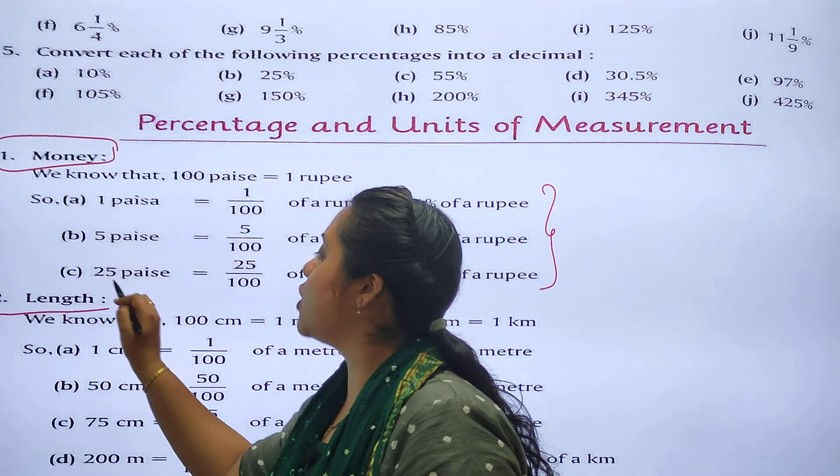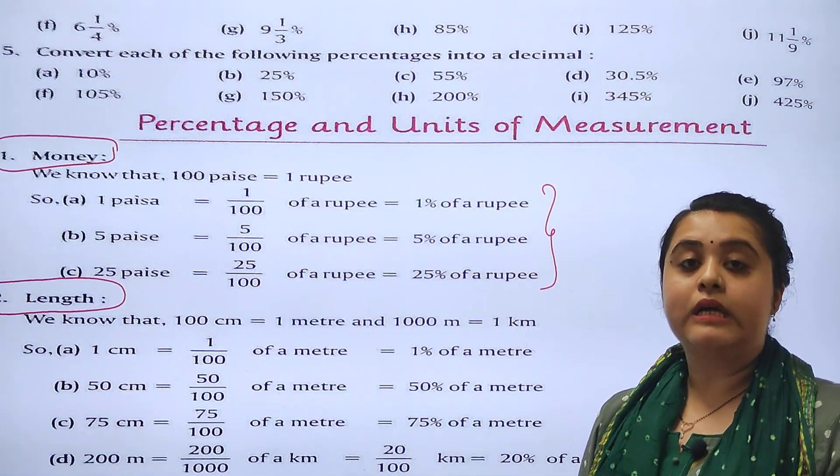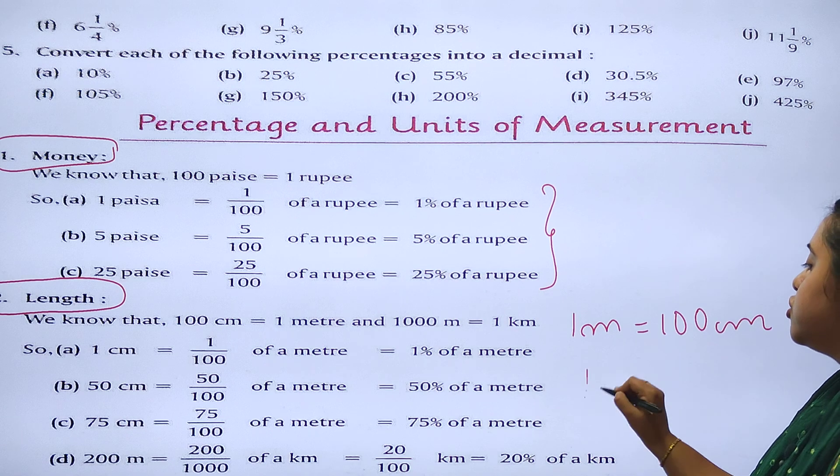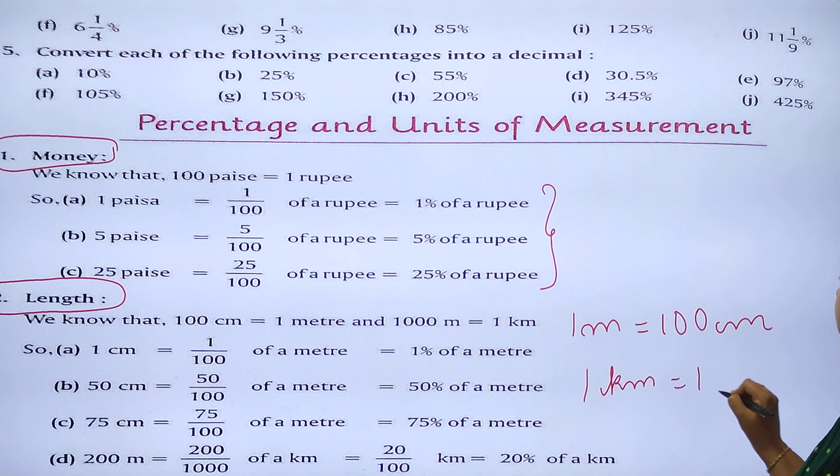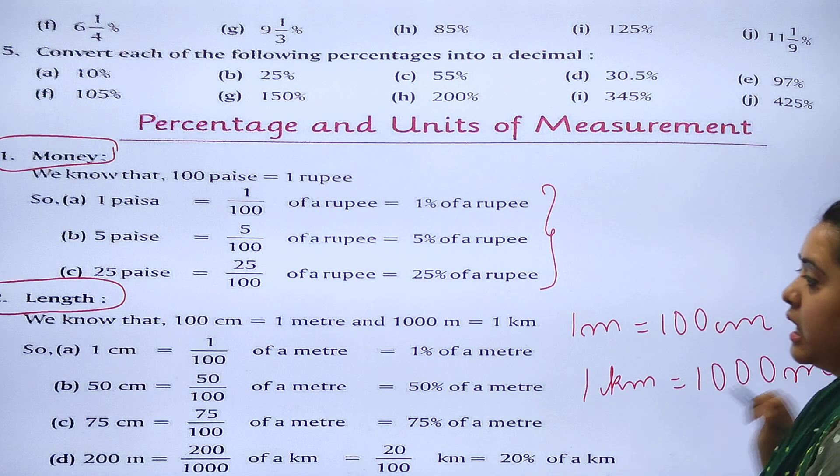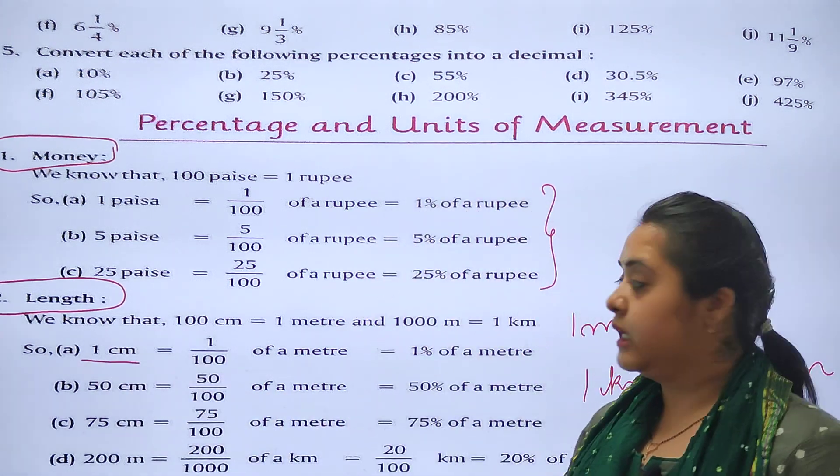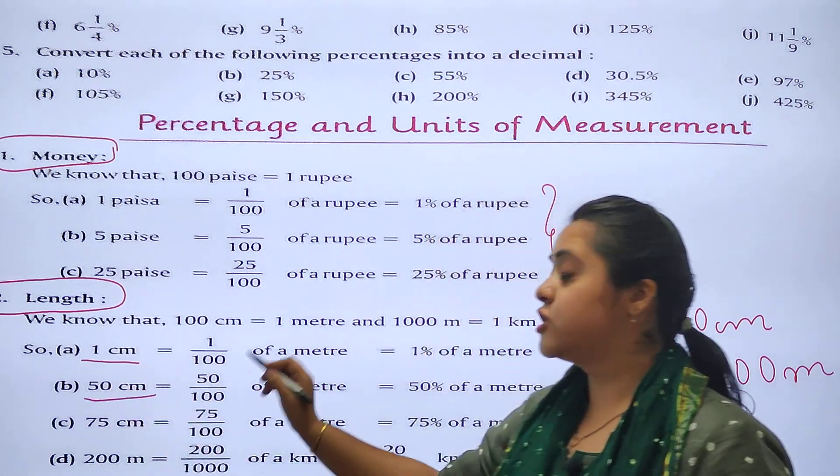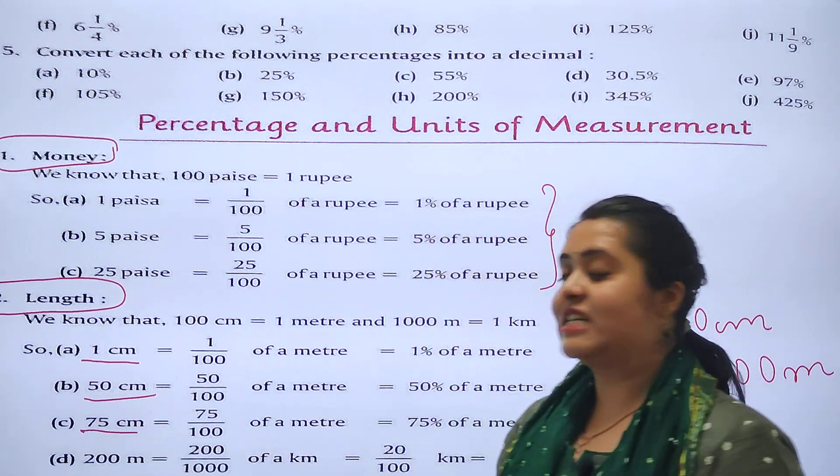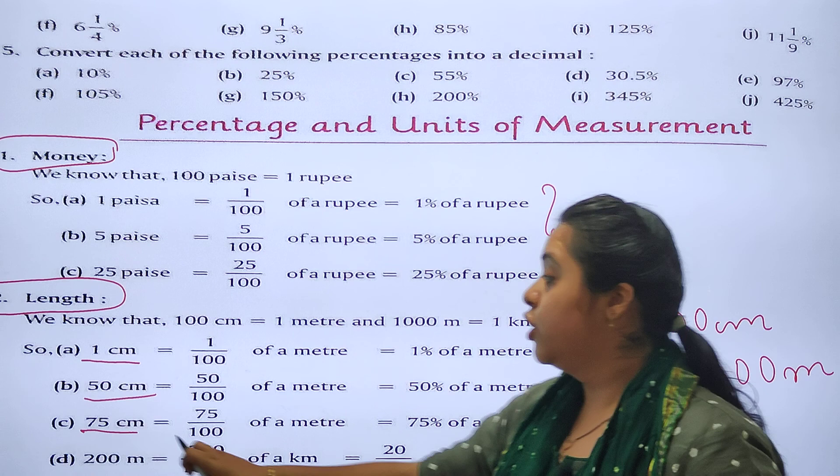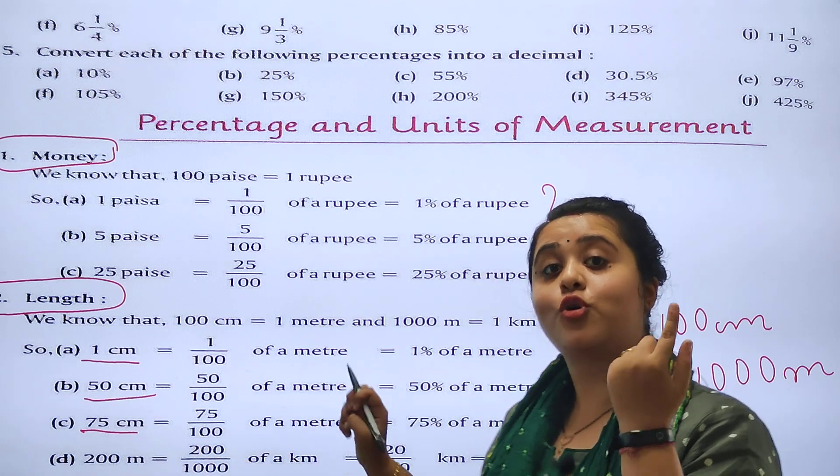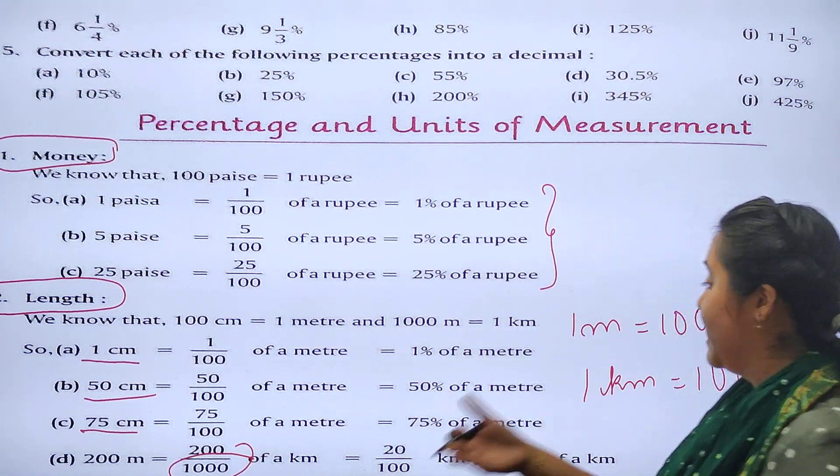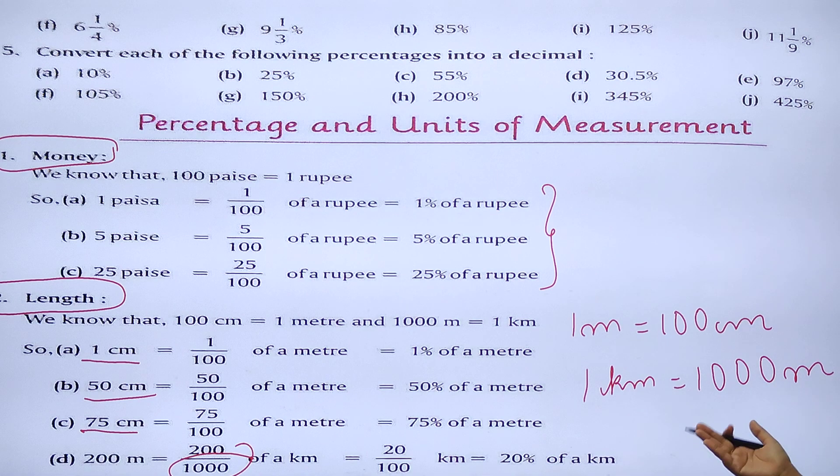Now the second is length. We know that 1 meter equals to 100 centimeters, and we also know that 1 kilometer equals to 1000 meters. If 1 centimeter is given, so 1 upon 100. 50 centimeter, so 50 upon 100. 75 centimeter, 75 upon 100. 200 meters, so 200 upon 1000. Why 1000? Because of this conversion.